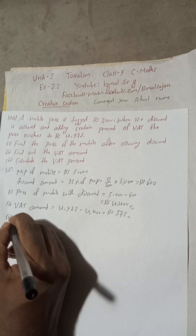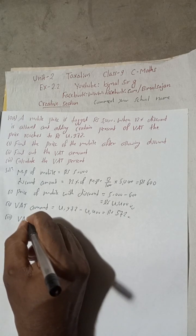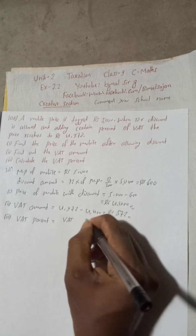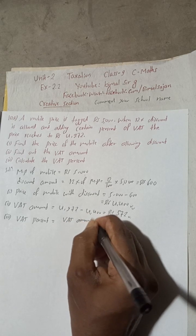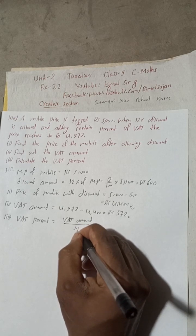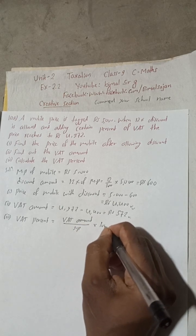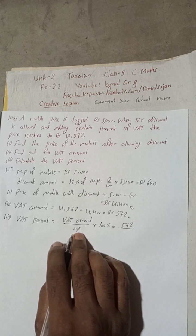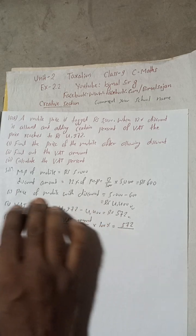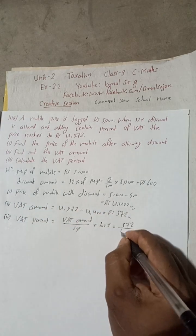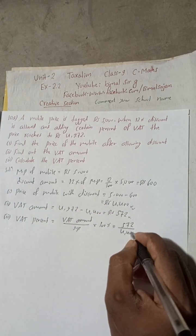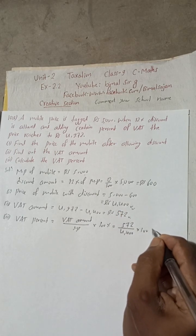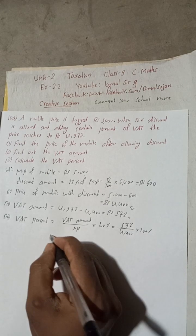Now number three, calculate VAT percent. So VAT percent is equal to VAT amount by SP into hundred percent. So VAT amount is 572 and SP, we have to take without, this price without VAT, so this 4400. Now this is 100%. So 2-0 cancel. When you divide 572 by 44, you will get 13%. So this is the solution of this 10a.